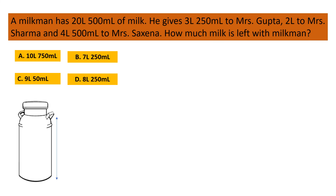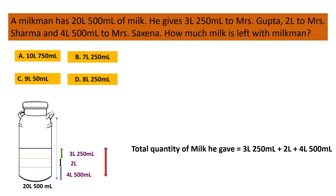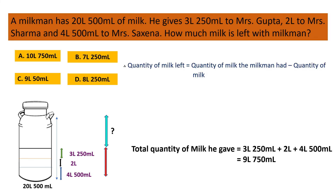This milk container has 20 liter 500 milliliter of milk. He gives 3 liter 250 milliliter to Mrs. Gupta, 2 liter to Mrs. Sharma, and 4 liter 500 milliliter to Mrs. Saksena. The total quantity of milk he gave is equal to 3 liter 250 milliliter plus 2 liter plus 4 liter 500 milliliter, which is equal to 9 liter 750 milliliter.